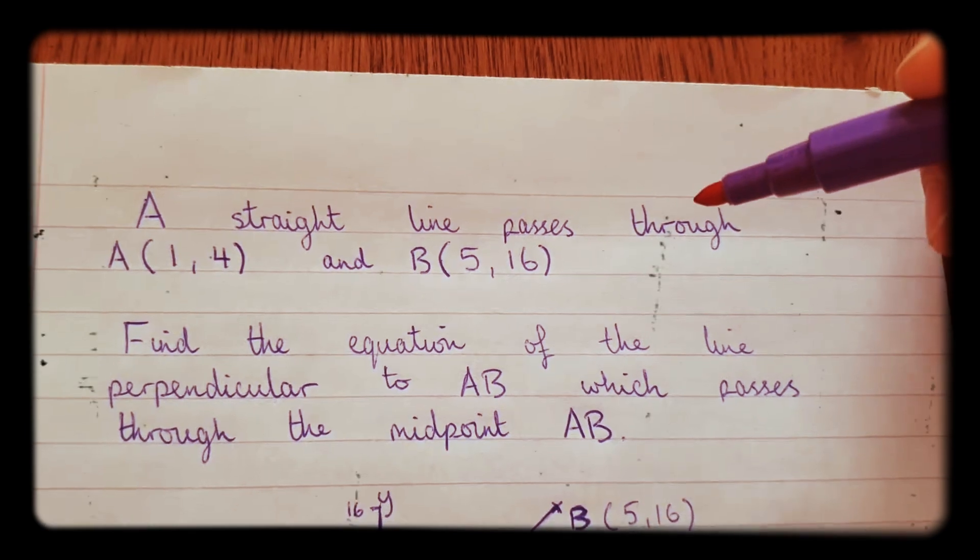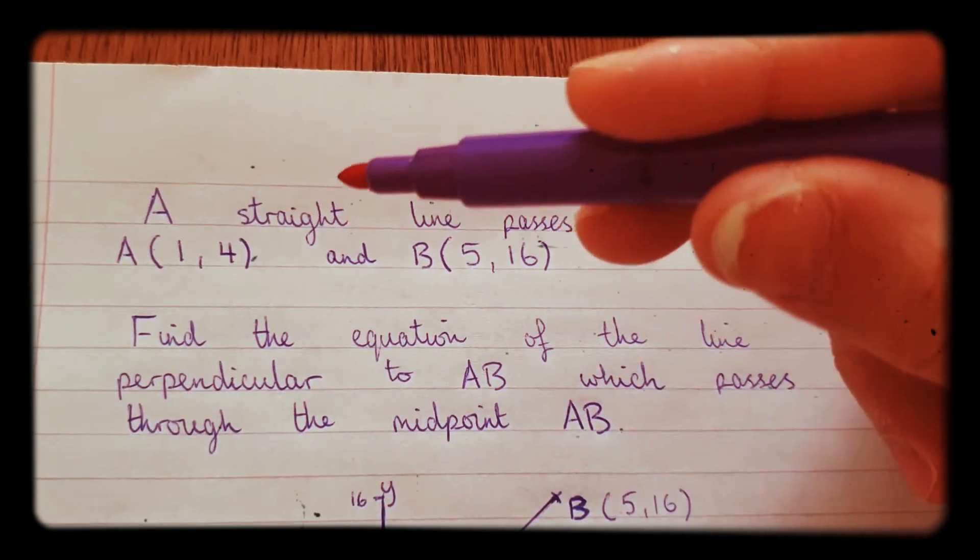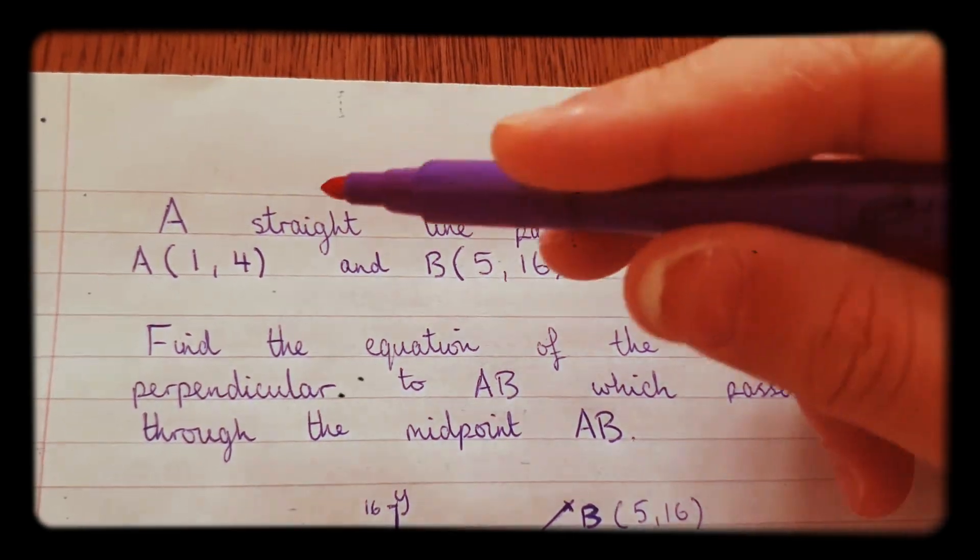A straight line passes through A(1,4) and B(5,16), so these two points.